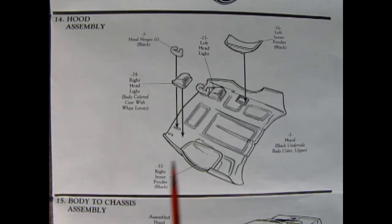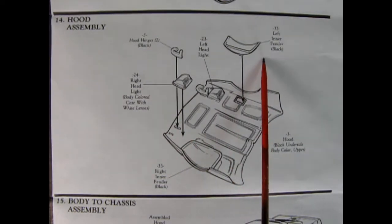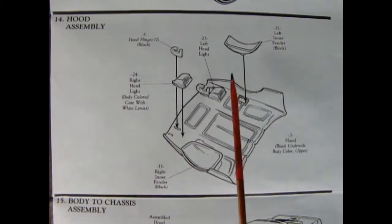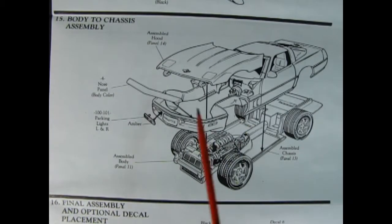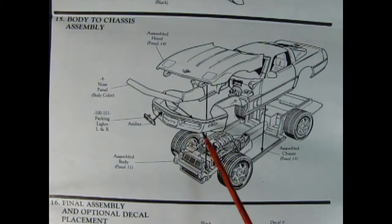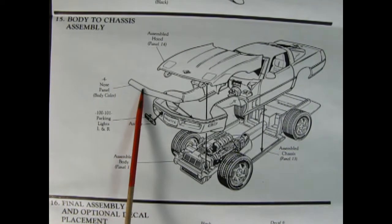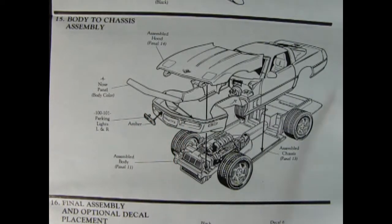Panel 14 shows our hood assembly. Here we've got the hinges that glue on and then our headlights are underneath. And then we have our inner fenders going on the top. In step 15, we've got our body to chassis assembly. You want to drop the body on and carefully hook the hood onto these little pins on the chassis. There's our headlights going in, or sorry, our parking lights. There's our nose panel which glues on as well. And then once it's all together, you've got a really cool looking fourth generation Corvette.